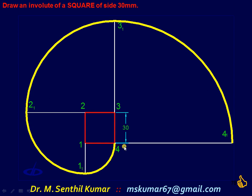This is nothing but the involute of a square of side 30 mm. The total length of the string is equal to 4 times 30, that is 120 mm — the length of the string used in this particular case.